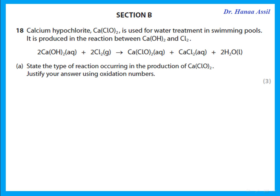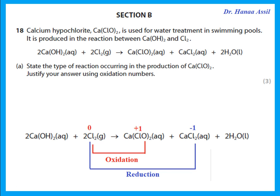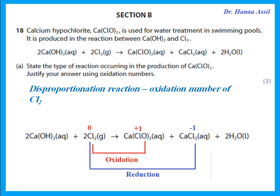Calcium hypochlorite is produced by the reaction of calcium hydroxide with chlorine. What type of reaction is this? Chlorine is changing into two products: one goes from 0 to +1 (oxidation) and the other goes from 0 to −1 (reduction). When the same species is both oxidized and reduced in the same equation to give two different products, this is called a disproportionation reaction.